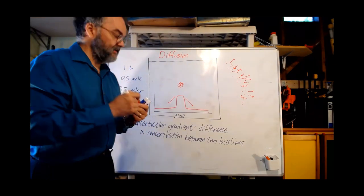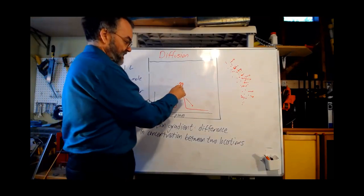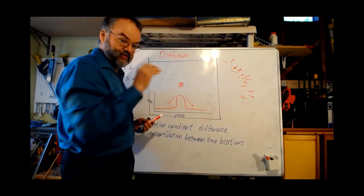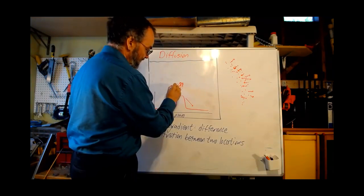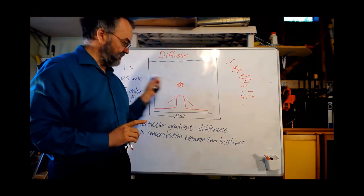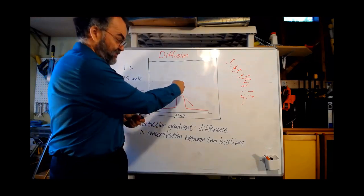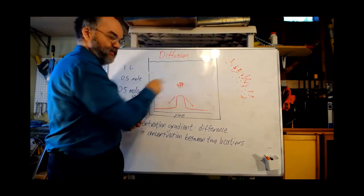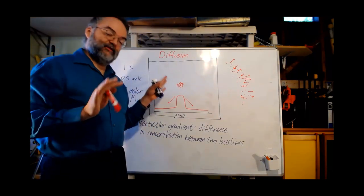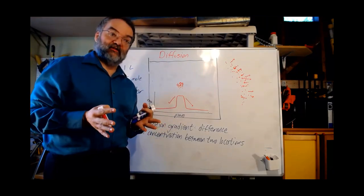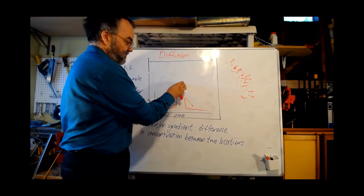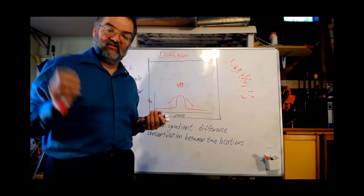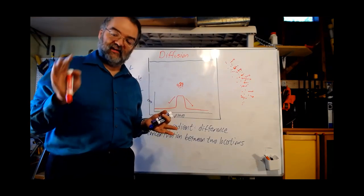Very important: diffusion does not say that any one particular molecule will move in any direction. The movement of each molecule is random. If I looked at one molecule on the edge and asked which direction is it more likely to move, it's tempting to say toward low concentration — but that is not correct. That molecule has a 50-50 chance of moving either way. Diffusion says that for the whole population, on average, they will tend to move from high to low concentration.